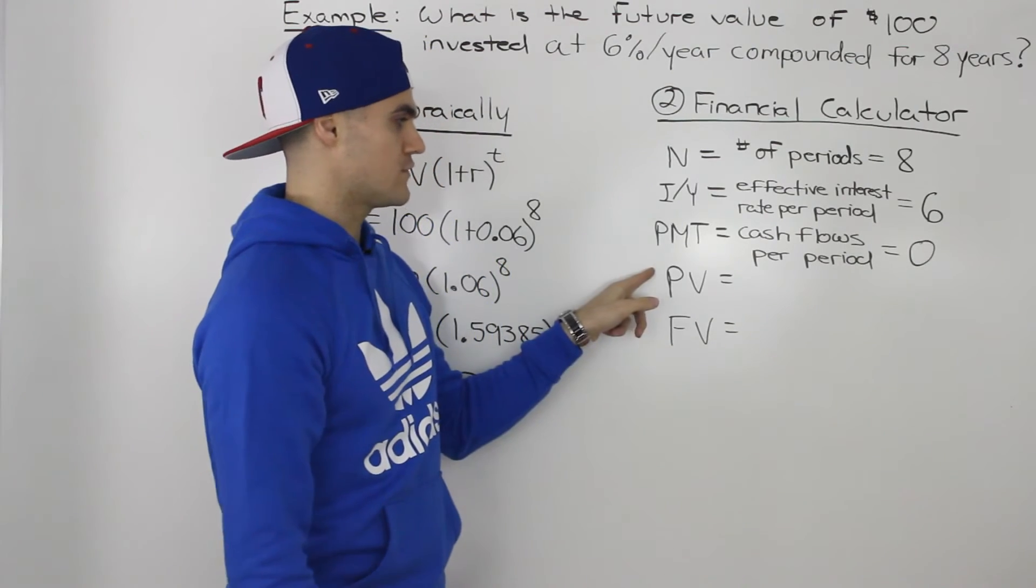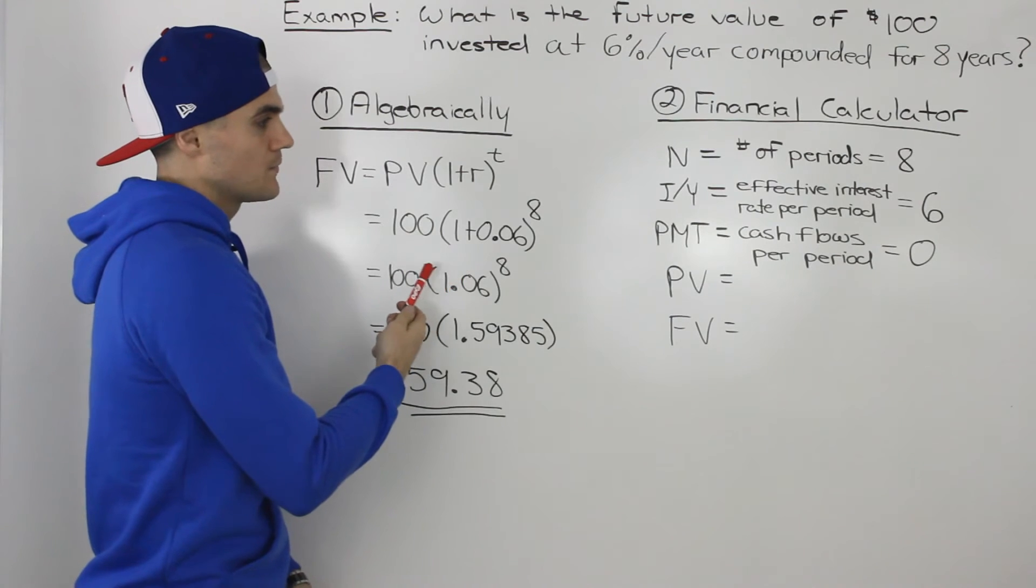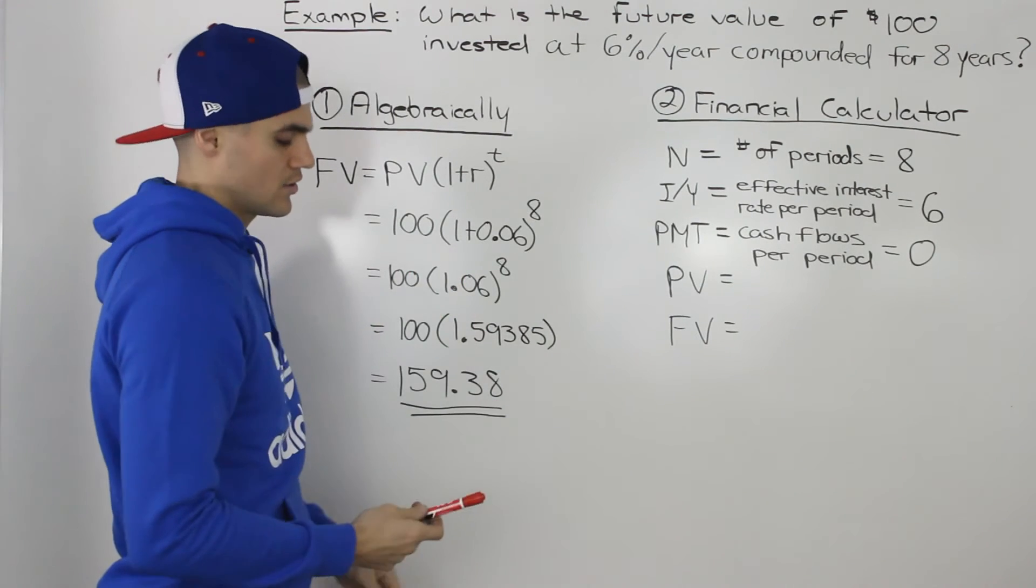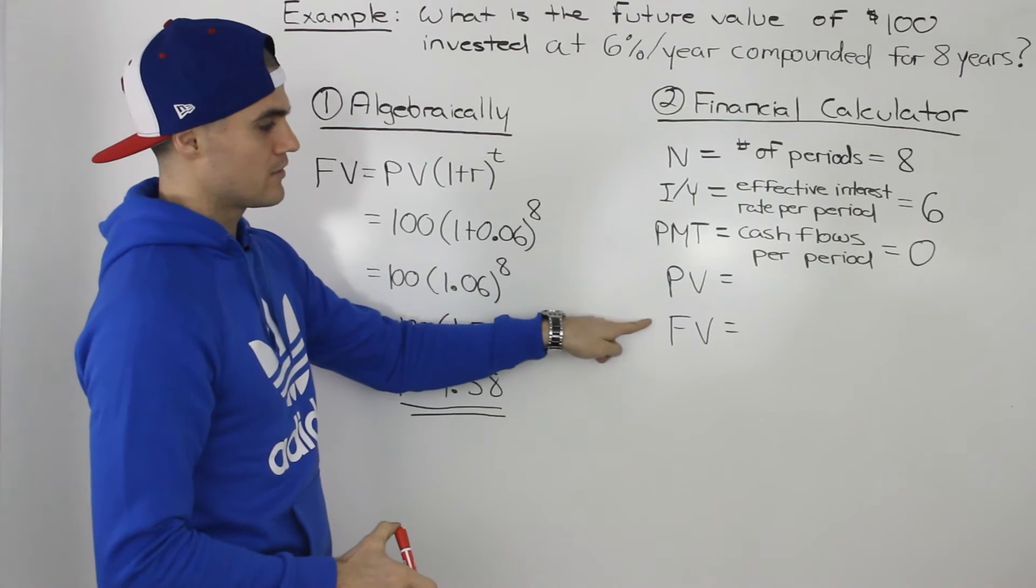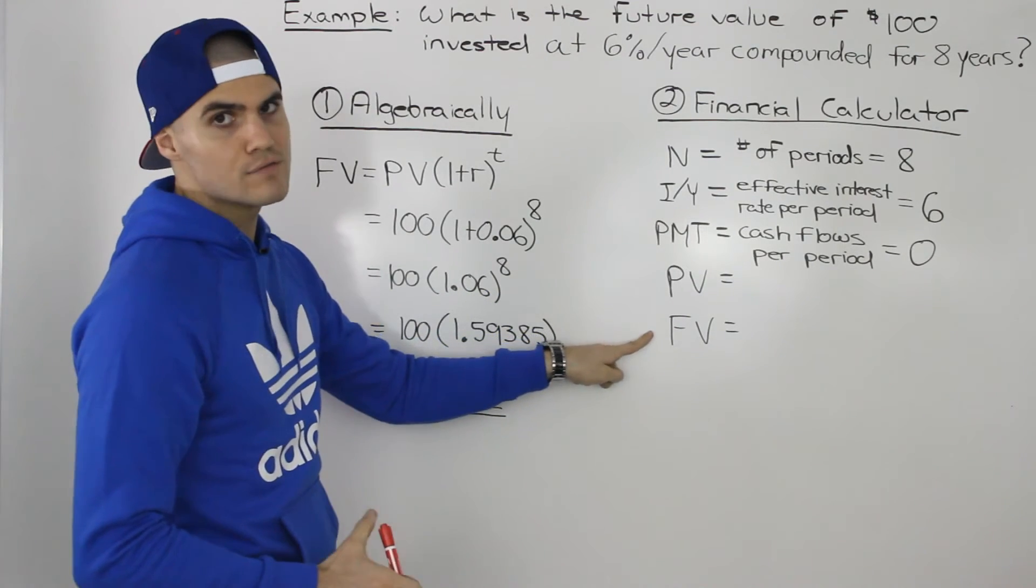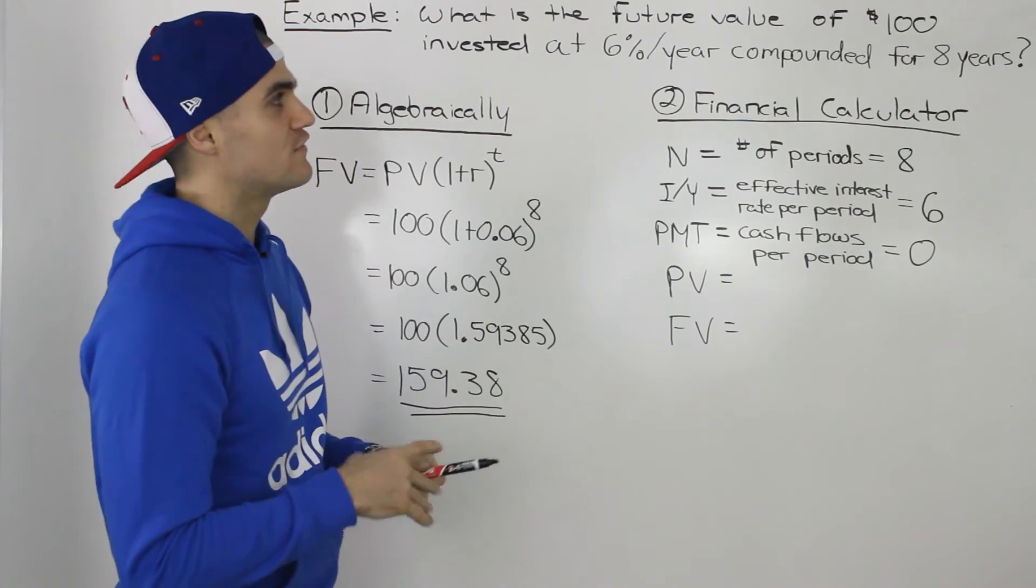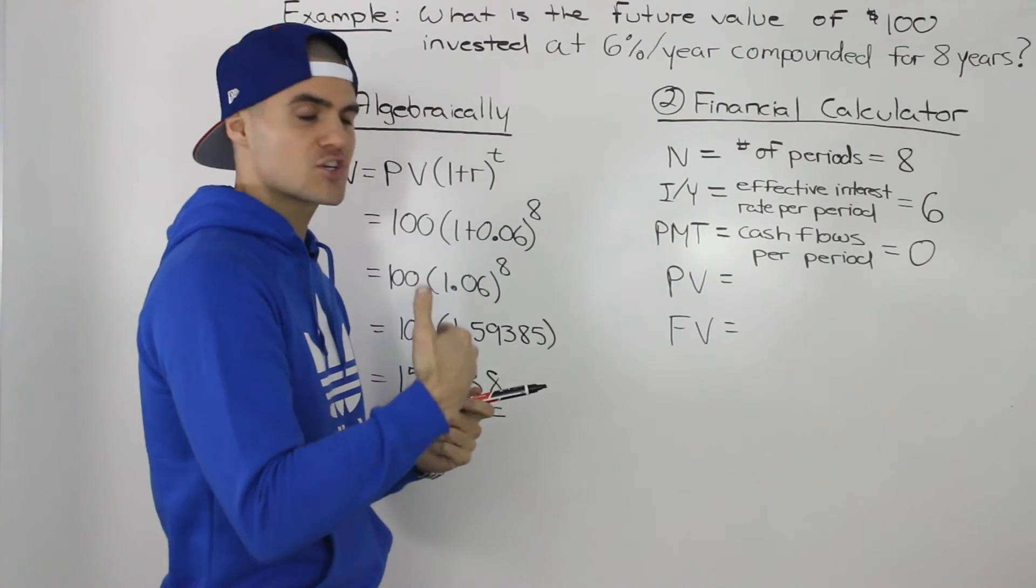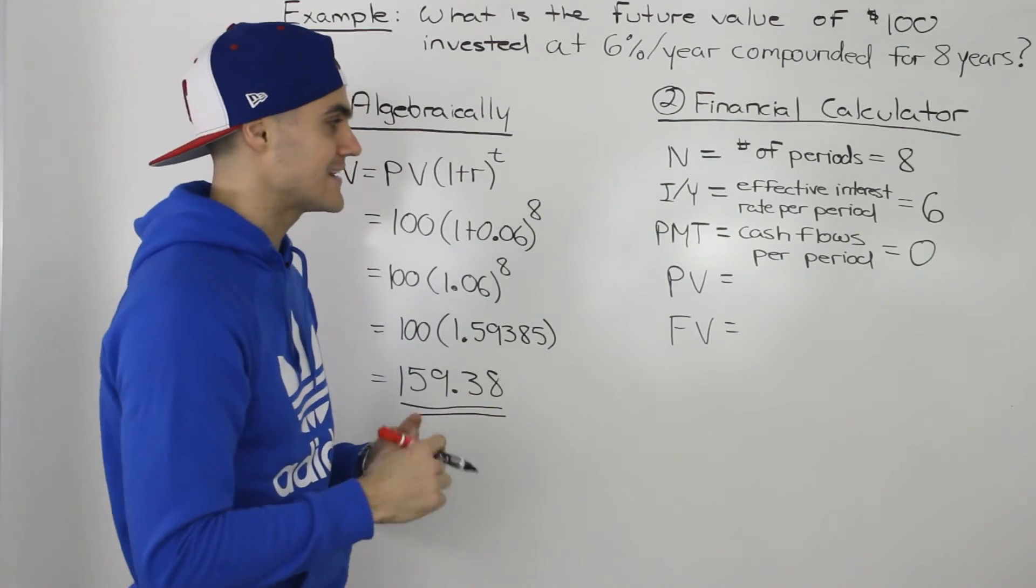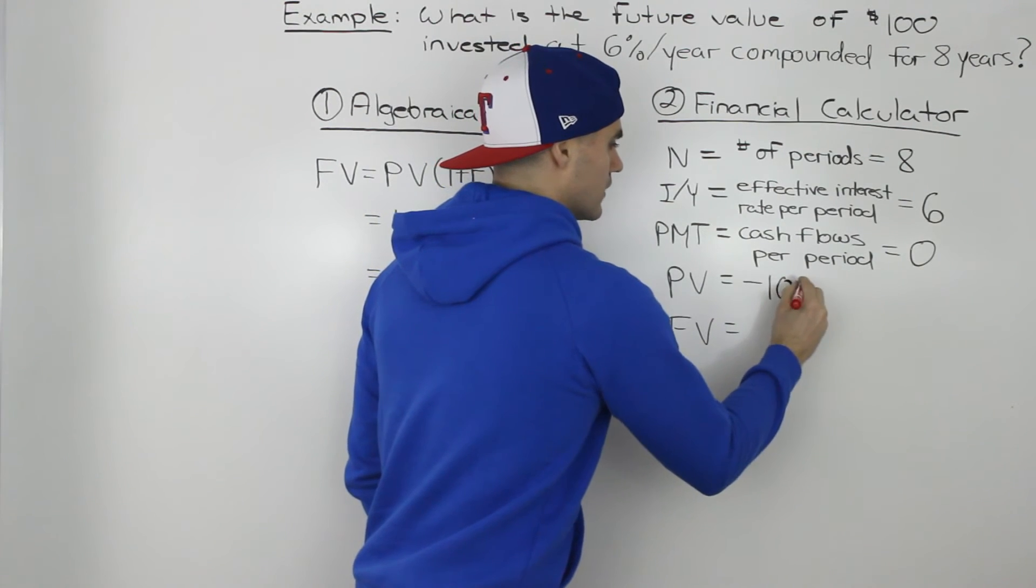Moving on to the next variable, the PV. Pretty self-explanatory. It's basically the present value. And in this case, it's the $100. But what you want to be careful when you're dealing with these variables, the PV and the FV, is positive and negatives. Because you're investing the $100, so you're giving $100, that's a cash outflow for you. So that's a negative cash flow for you. So this would be negative 100.